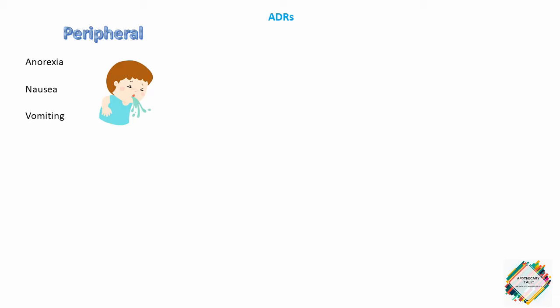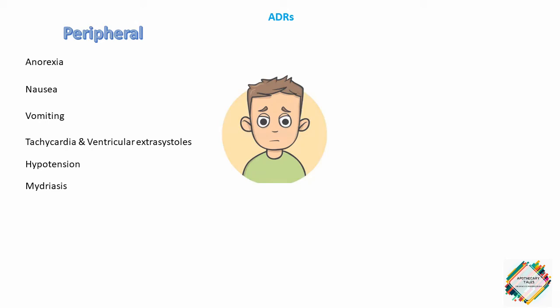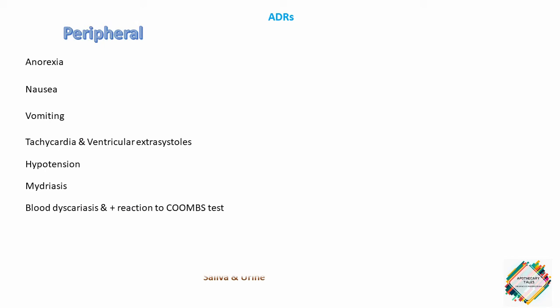The peripheral adverse effects include anorexia, nausea and vomiting, mainly due to stimulation of the chemoreceptor trigger zone. Tachycardia and ventricular extrasystoles can occur due to the dopaminergic action on the heart, and hypertension may also develop. Adrenergic action on the iris will cause mydriasis, and in some individuals blood dyscrasias and a positive Coombs test are seen. Saliva and urine are a brownish color because of the melanin pigment produced from catecholamine oxidation.